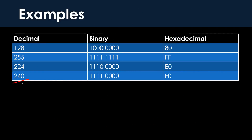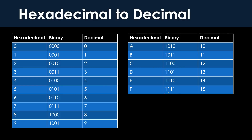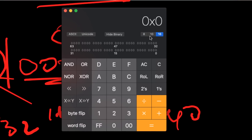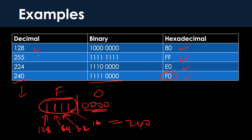One more example: 240. 240 in binary looks like 11110000, because 128 plus 64 plus 32 plus 16 equals 240. Split this in half: the lower four bits equal zero in decimal, and the upper four bits are four binary ones, which is F in hexadecimal. So the answer is F0 — 240 in hexadecimal is F0. We can verify: 240 is F0, 224 is E0, and 255 is FF in hexadecimal.